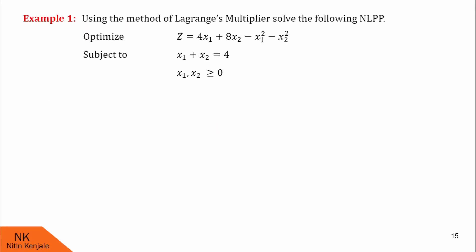Here we are asked to use the method of Lagrange's multiplier to solve the following NLPP. We have to optimize z = 4x1 + 8x2 − x1² − x2², subject to the constraint x1 + x2 = 4, given that both decision variables x1 and x2 are non-negative. Let us proceed for the solution.